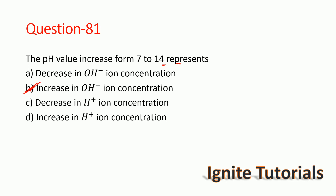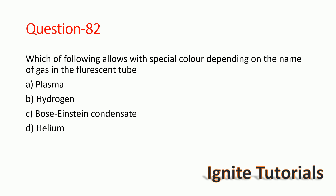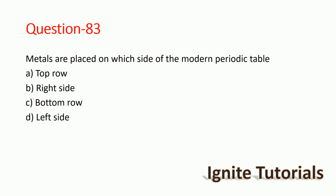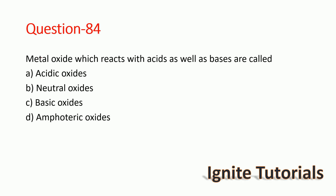Question 81: The special color in a fluorescent tube depends on the name of the gas — the correct answer is plasma, option A. Question 82: Metals are placed on which side of the modern periodic table? The correct answer is the left side — metals are placed on the left side.